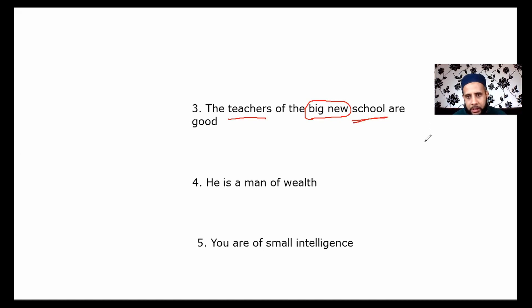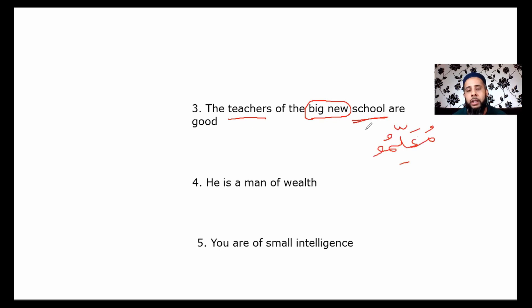First we put teachers, which is the mudaf. Teacher is مُعَلِّم, plural is مُعَلِّمون, but the noon drops because it is mudaf, giving مُعَلِّمو. Then مدرسة is school, so this becomes مُعَلِّمو المدرسة — the teachers of the school.